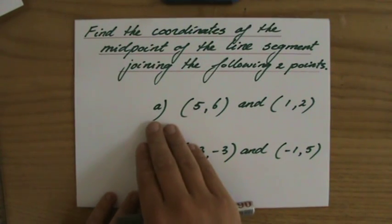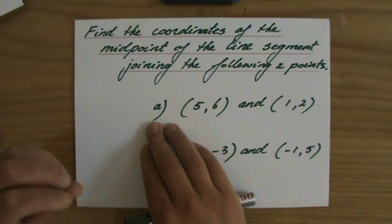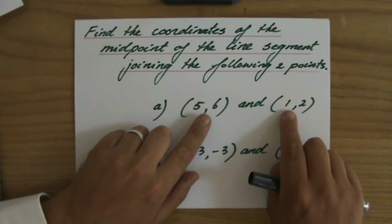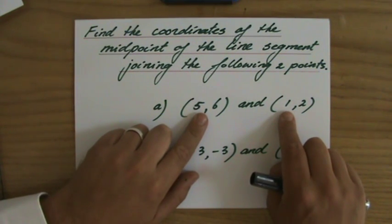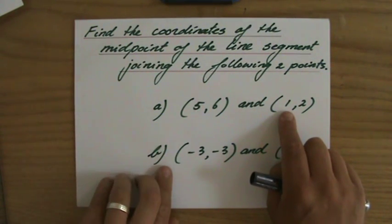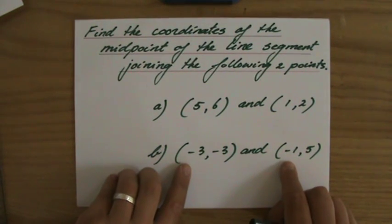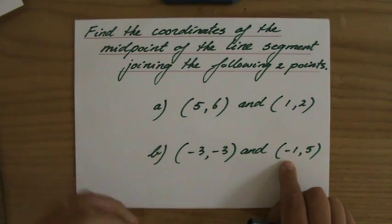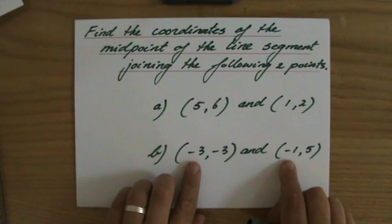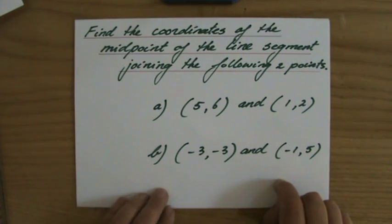So question A: What is the coordinate of the midpoint of the line segment connecting these two points, (5,6) and (1,2)? And question B: What is the midpoint of the line segment connecting these two points, (-3,-3) and (-1,5)?